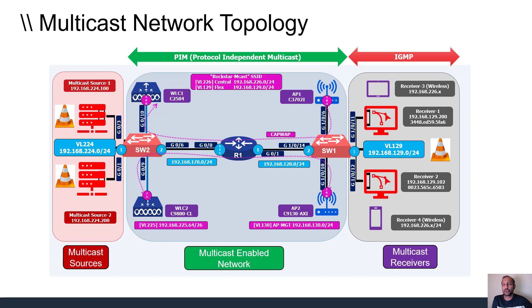When we get to the wireless section, we build on that topology by adding a Cisco AireOS controller — the Cisco 2504 — and an AP connected to that controller, creating wireless multicast receivers. We get familiar with the AireOS side of configuration and verification, and then finish with the 9800 side. Since AireOS controllers are end-of-life, understanding how to configure multicast on the 9800 platform is very important.